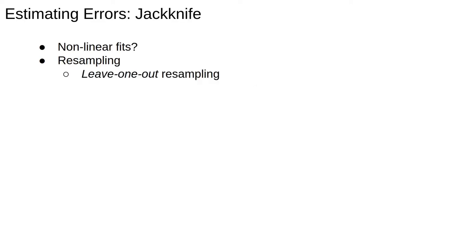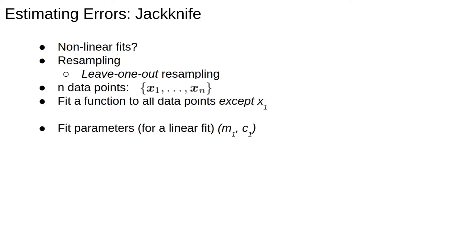For estimating errors, non-parametric approaches can be very powerful. One such method is jackknife resampling, also known as leave-one-out resampling. Assuming we have n data points, we would compute the first jackknife estimate of the slope and intercept parameters by fitting all the data points except for x1. This gives an estimate of the parameters which we call m1 and c1.